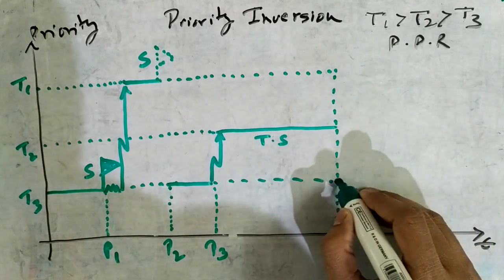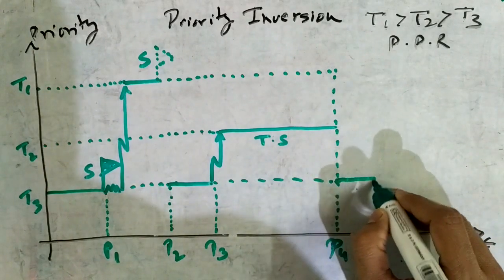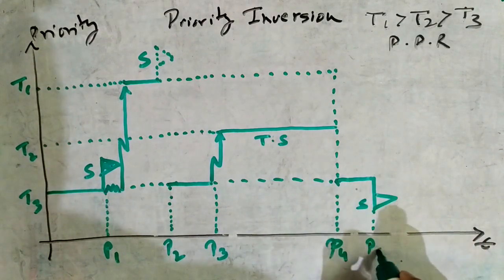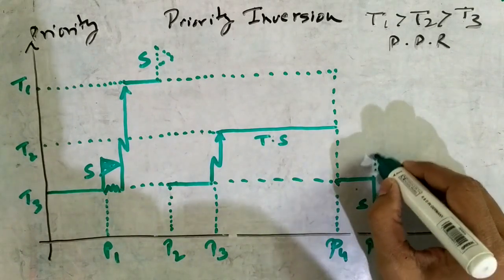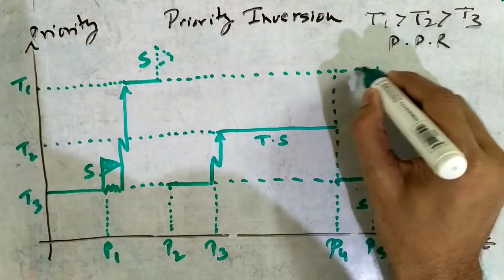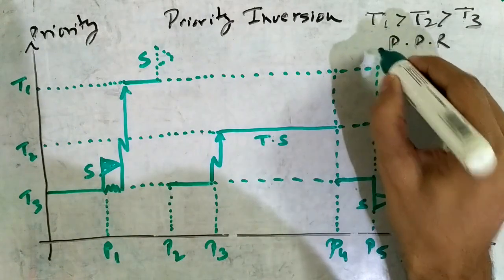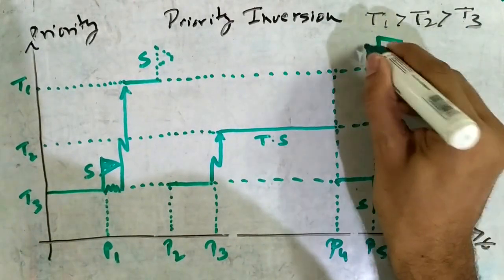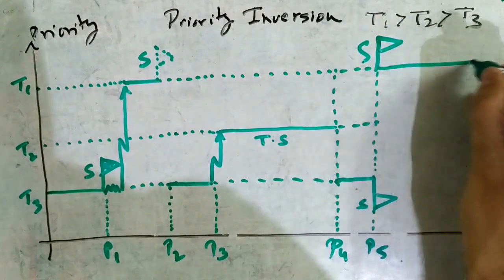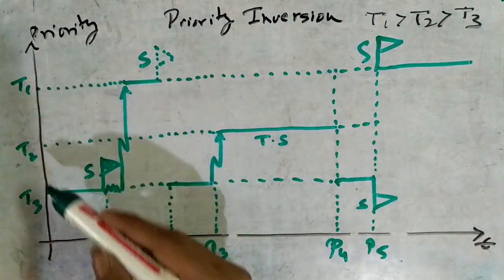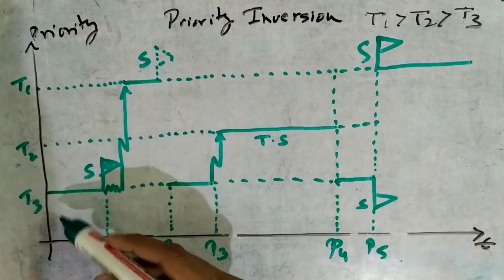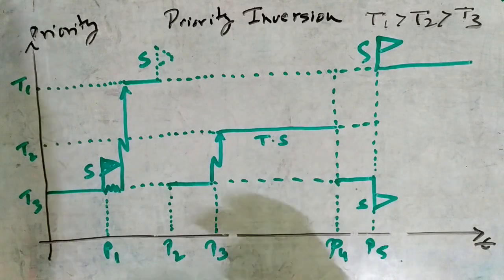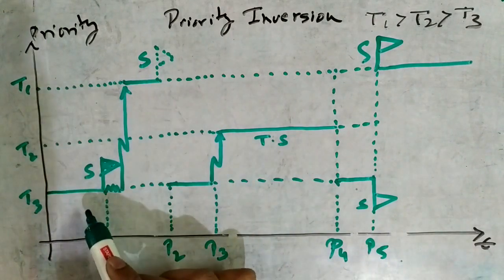T3 continues to run and releases resource S at point p5. The release of S is communicated to T1, which is waiting on it. T1 acquires S and continues execution. As you can see, T1 was made to wait for both task T2 and T3, which are of lower priority.